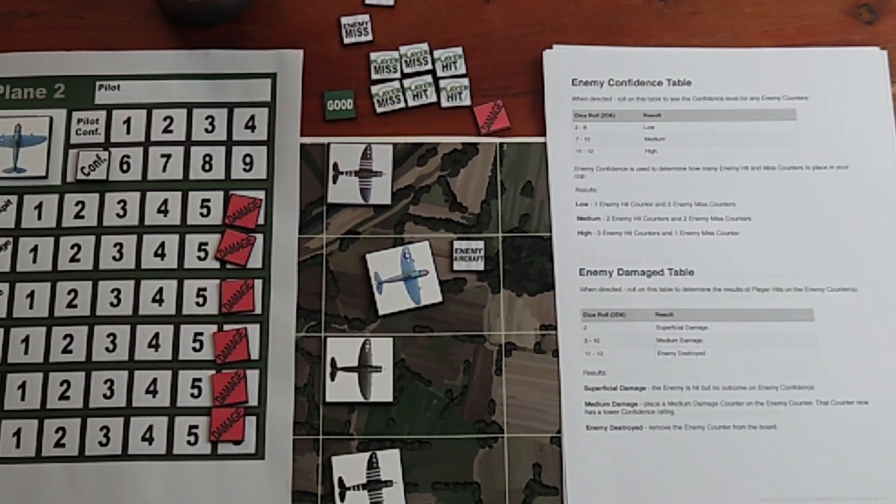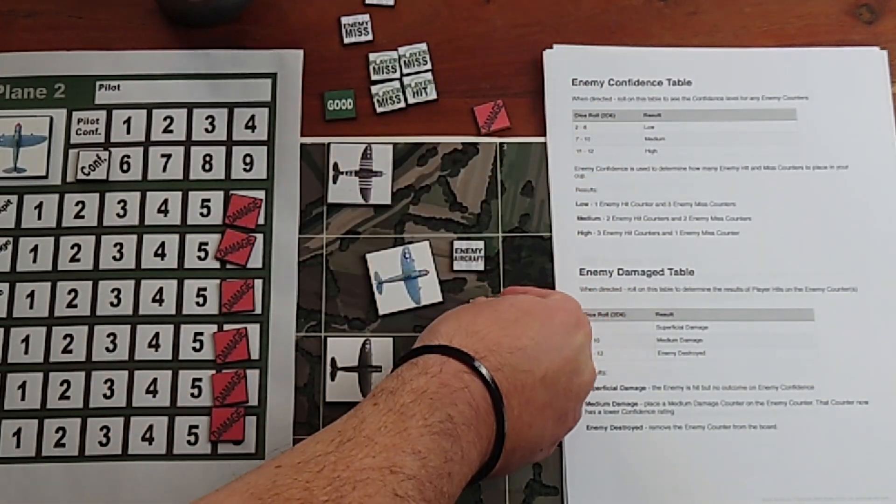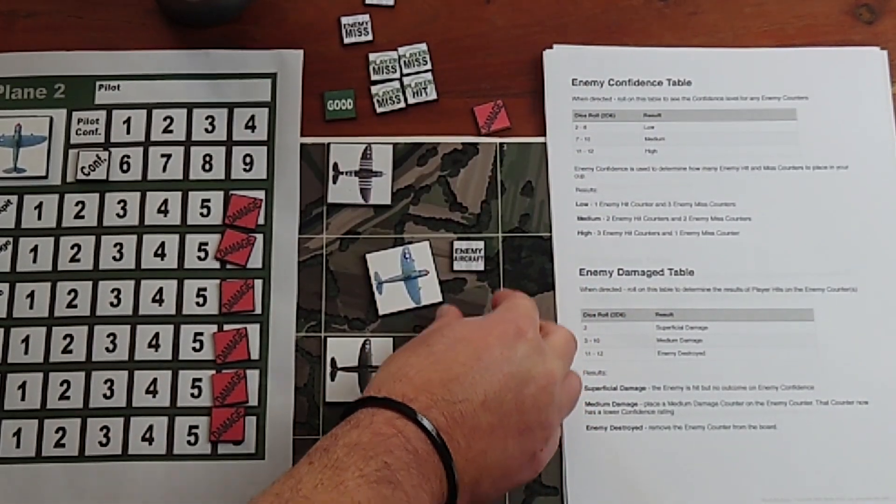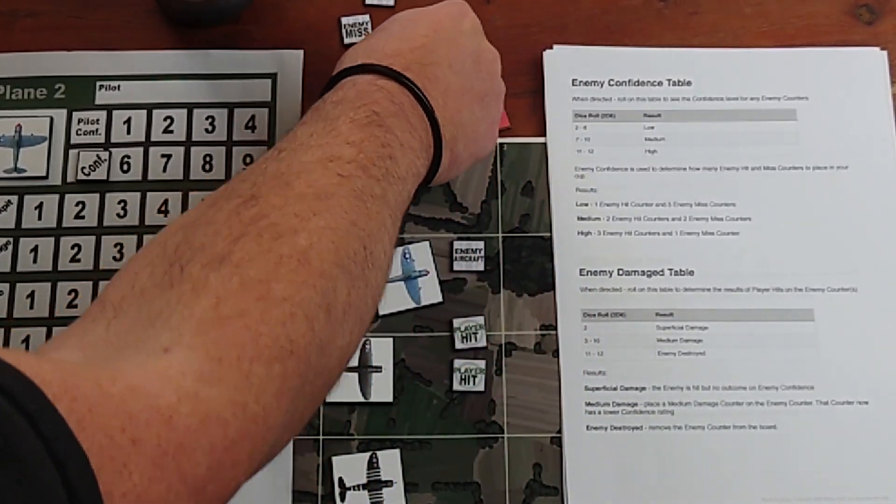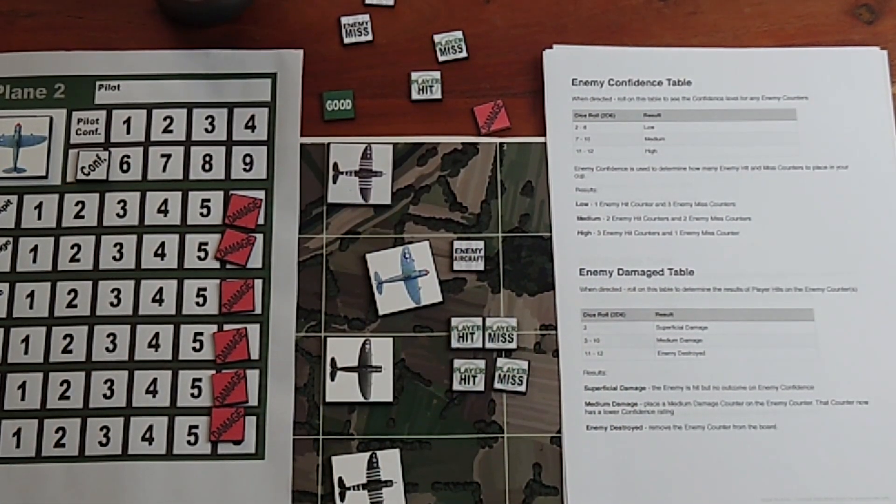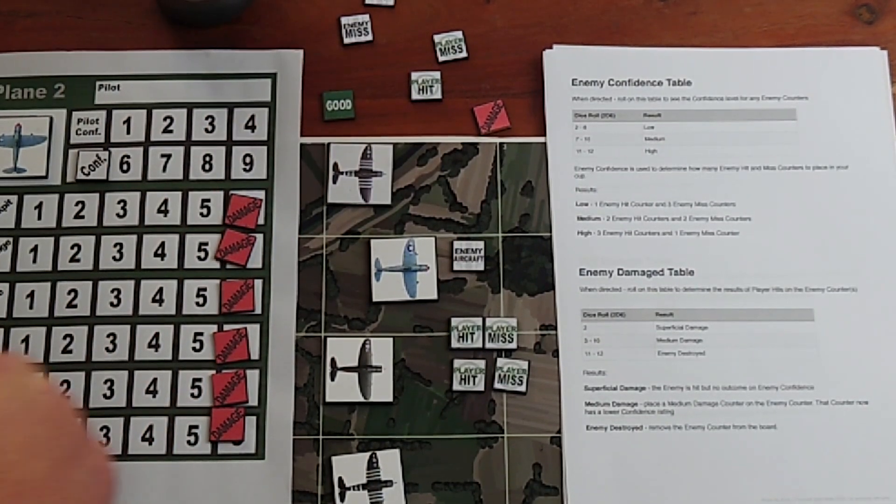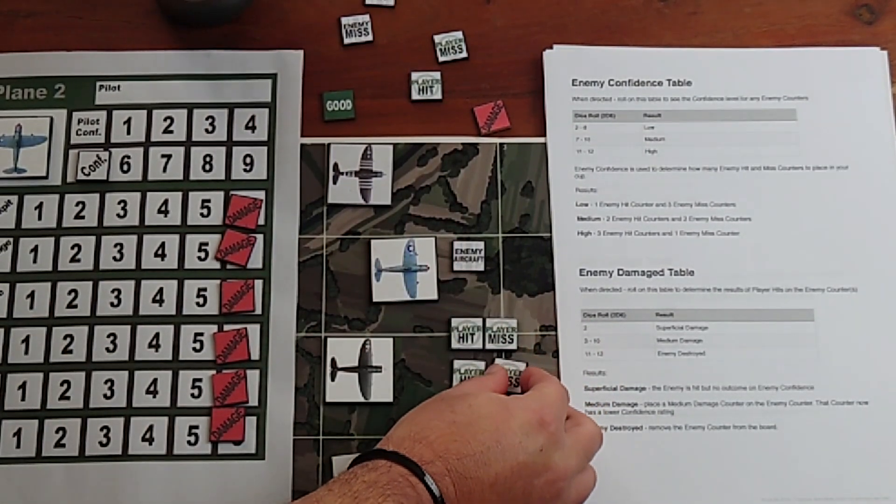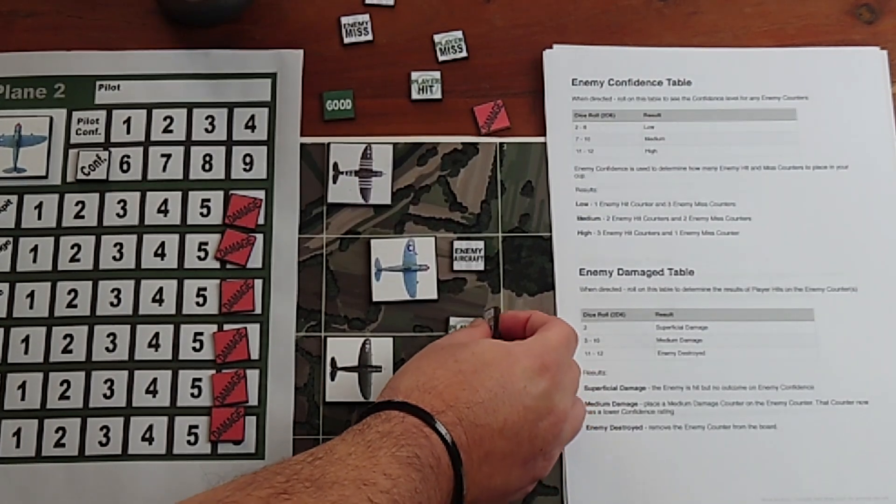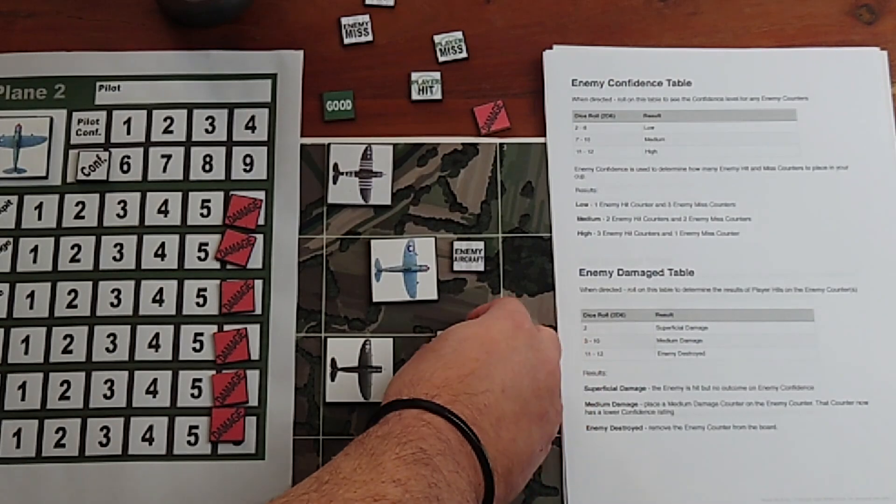Then what I'm also going to be doing is placing player hit and player miss counters into the cup. Again, that is based on the confidence level of that pilot, the P-47 pilot. For the sake of argument, just to keep it nice and simple for demonstration purposes, let's place two of those in the cup.